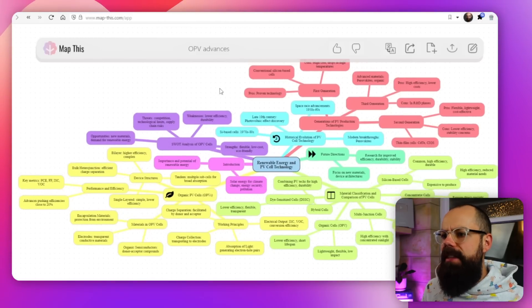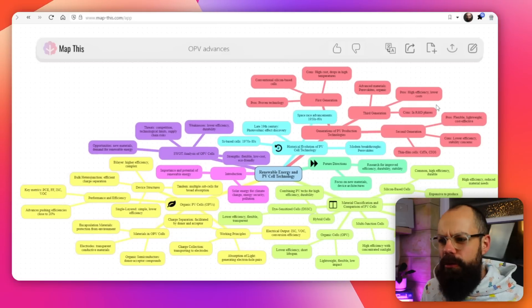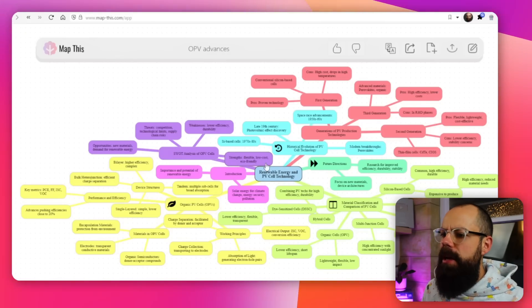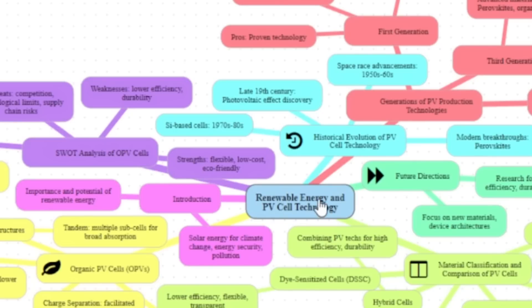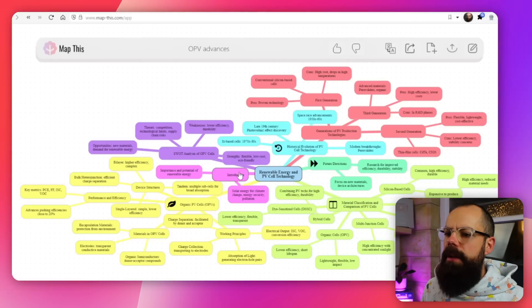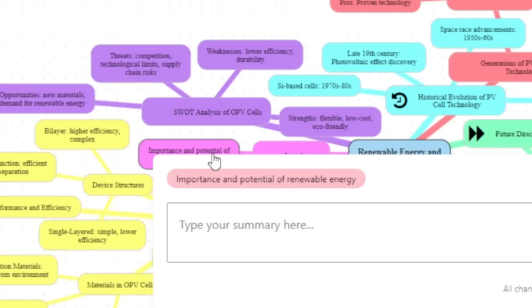So I put that PDF in, and this is what it created. I think this is probably one of the best tools for creating a mind map for any sort of peer-reviewed review article. In the middle, we've got renewable energy and PV cell technology, and then we've got the different branches organized by color. The first branch is historical evolution of PV and solar cells, then we've got the introduction and the importance of those things.